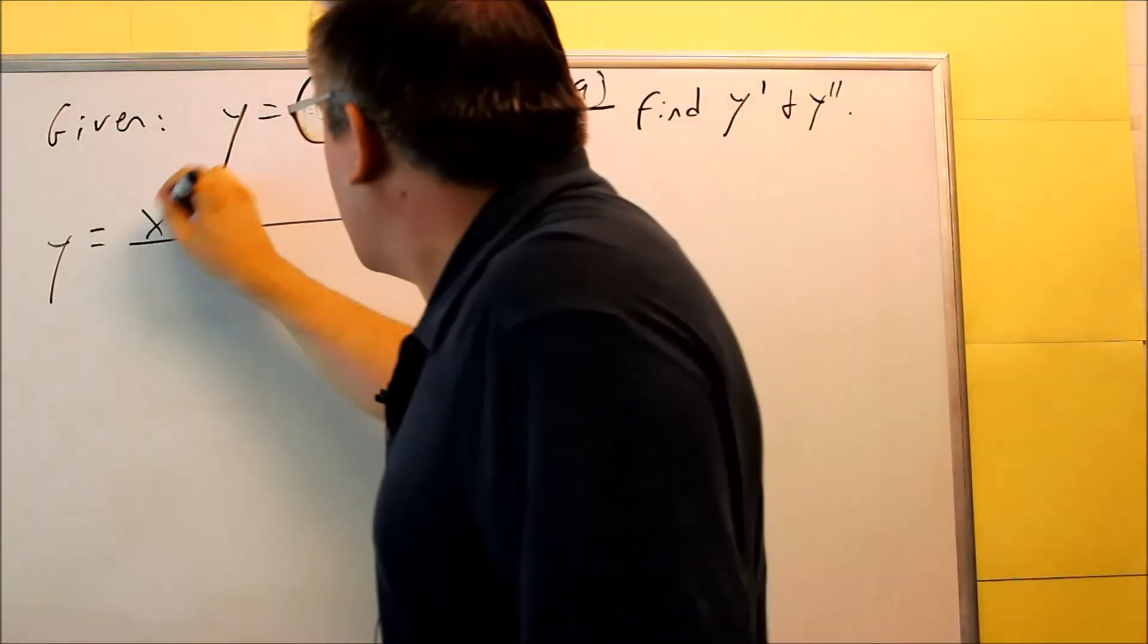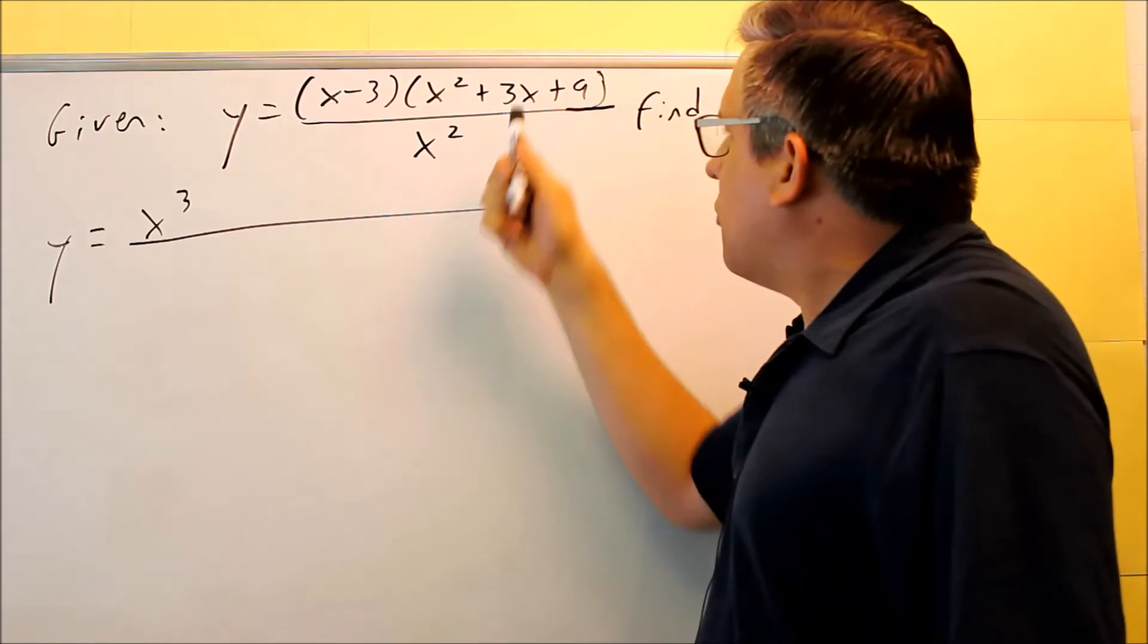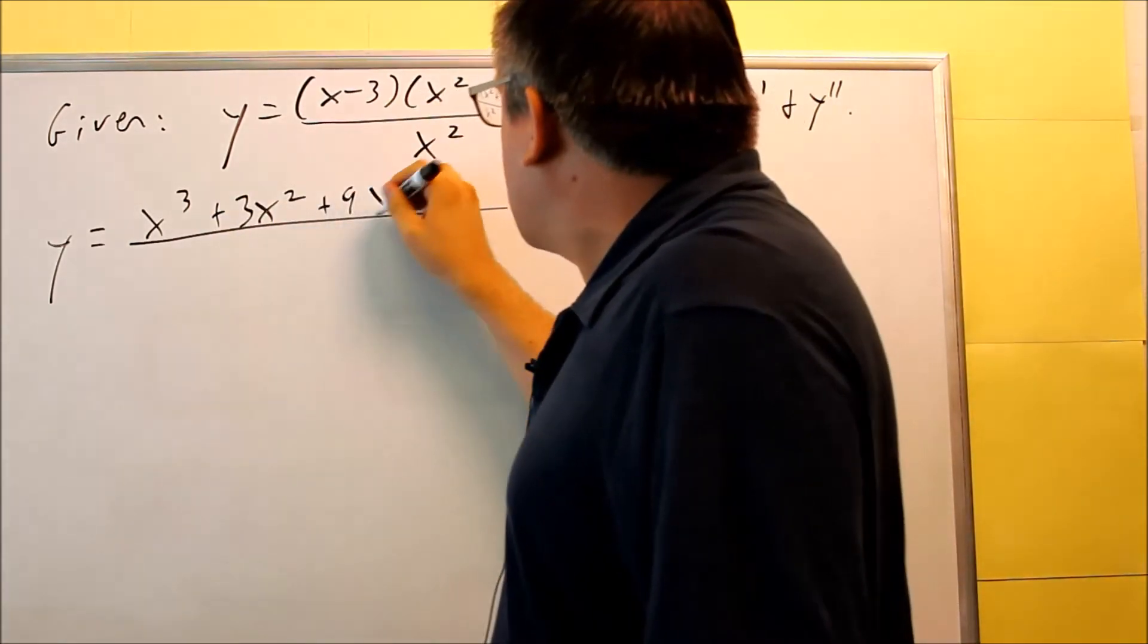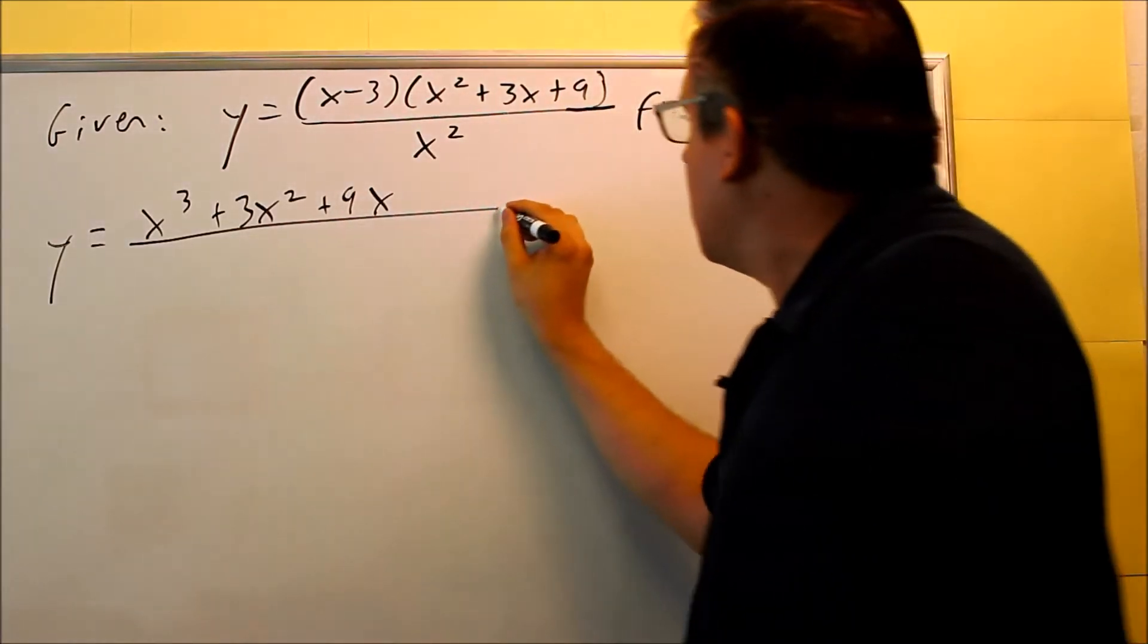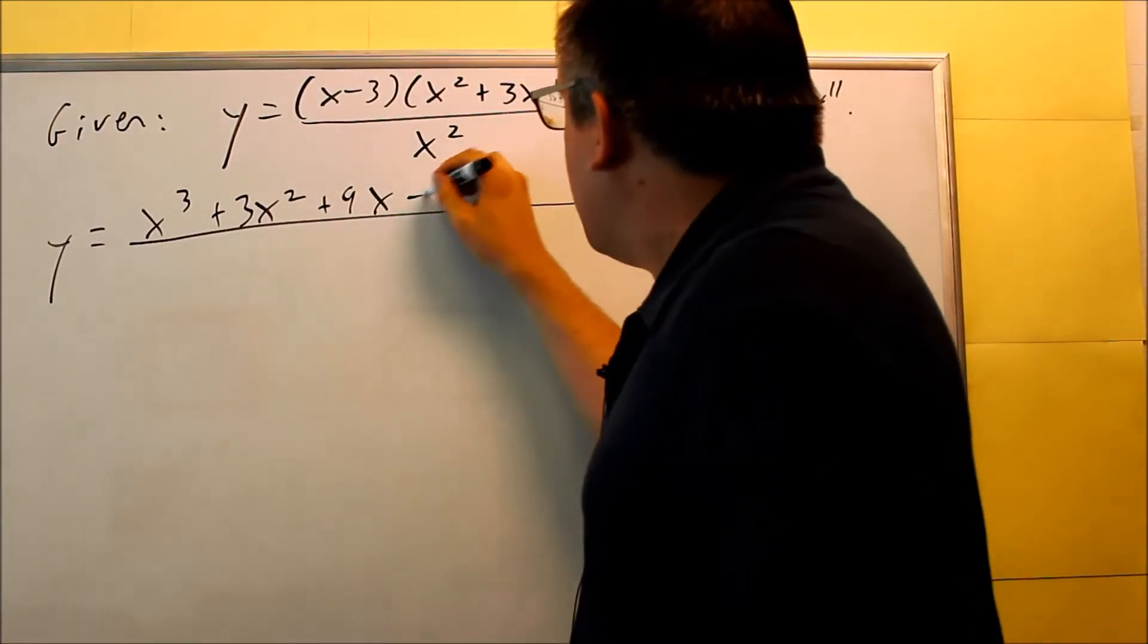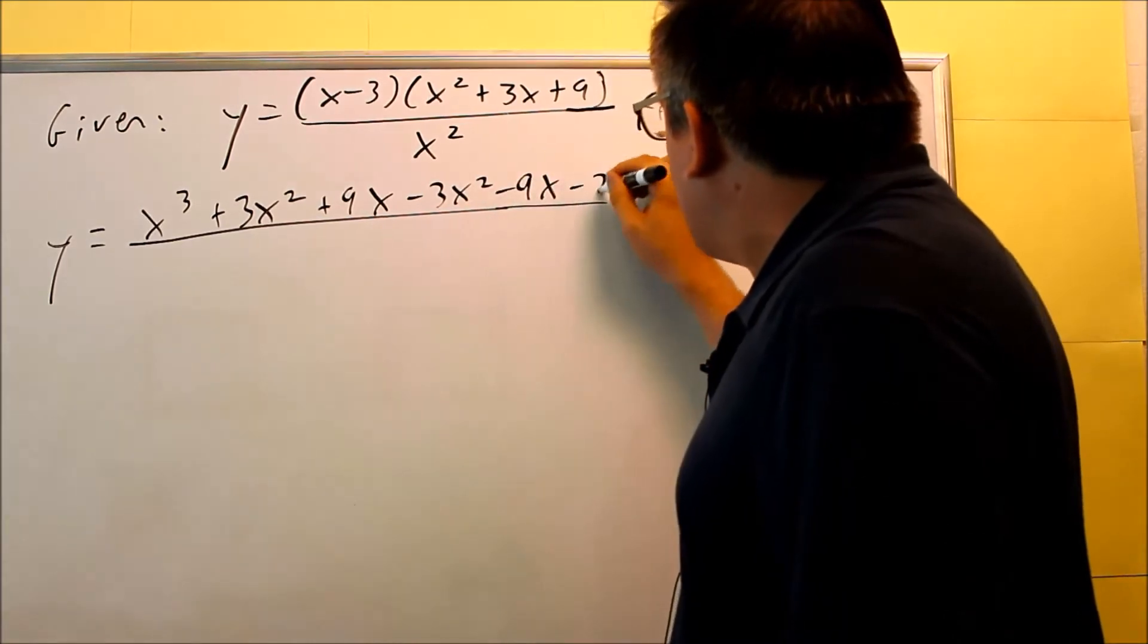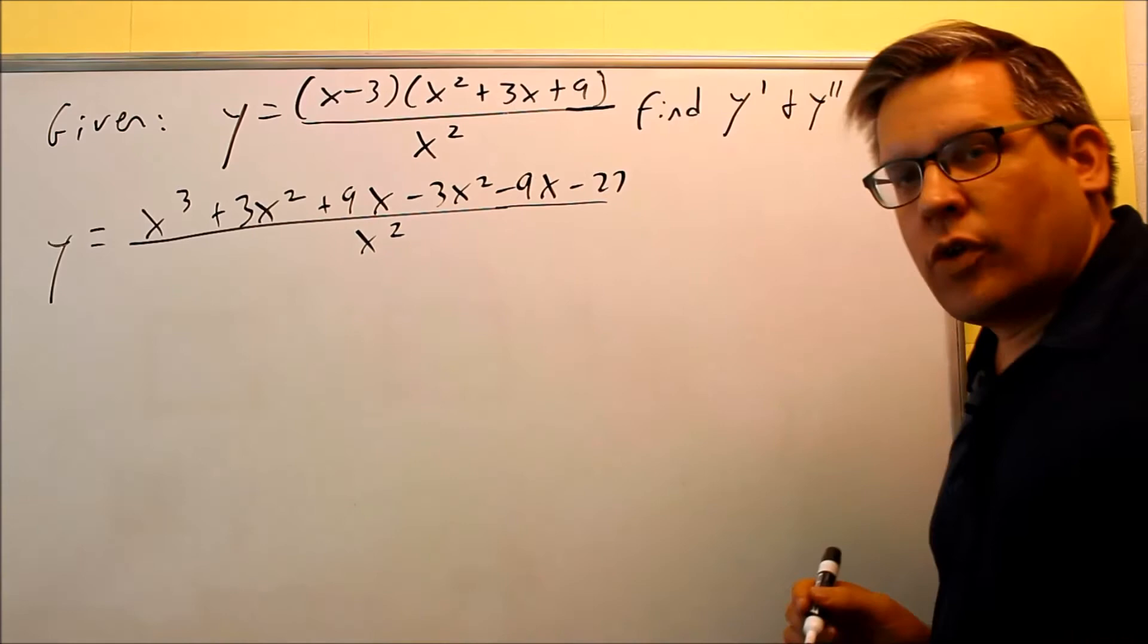So x times the first one, I get x cubed, and then times the middle term, I get 3x squared, x times 9 is 9x, then I'll take negative three times everything inside, so when I do that, I'll get negative 3x squared, negative 9x, negative 27. All this is over x squared.